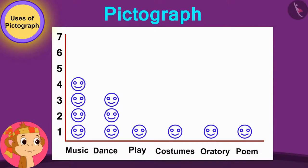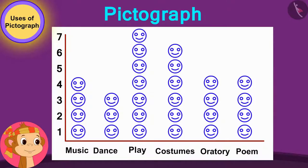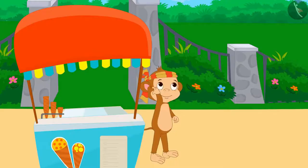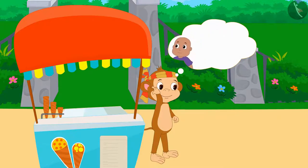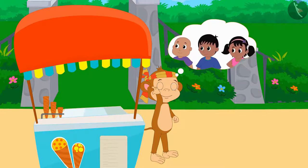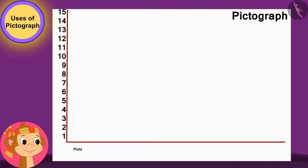Babban is now very happy to have learnt about the pictograph. He wants to sell new ice creams in his ice cream stall. But he is unable to decide which new ice cream will sell more. Then he thought, why not ask his customers to find out which ice cream they would like more.